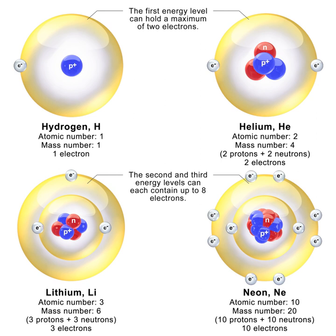Three types of beta decay in competition are illustrated by the single isotope copper-64, with 29 protons and 35 neutrons, which has a half-life of about 12.7 hours. This isotope has one unpaired proton and one unpaired neutron, so either the proton or the neutron can decay. This particular nuclide is almost equally likely to undergo proton decay by positron emission (18%) or by electron capture (43%), or neutron decay by electron emission (39%).